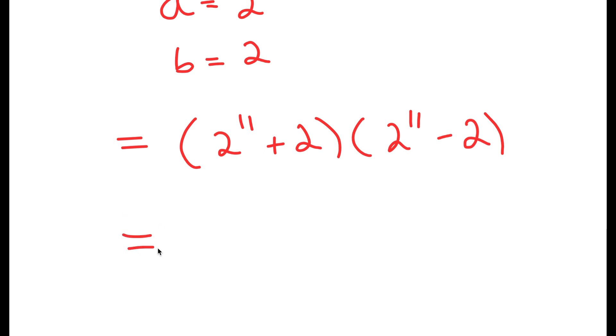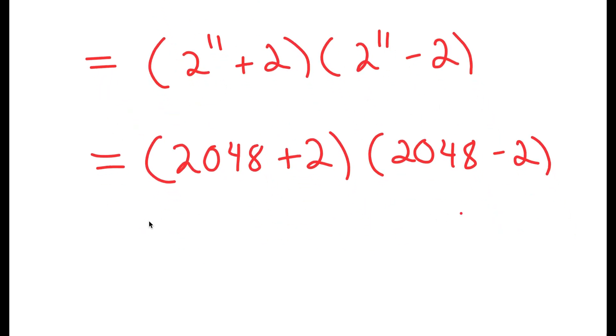Now, if you guys didn't already know, 2 to the power of 11 is equal to 2048. So I get 2048 plus 2 times 2048 minus 2, and this is equal to 2050 times 2046.